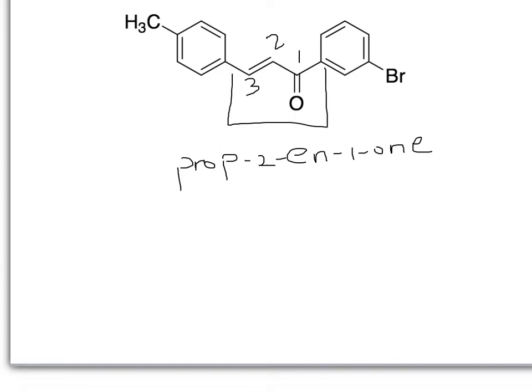Then we have to focus on these substituents. There's one there and one there. This substituent, we start numbering this way, one, two, three, and it will be three-bromophenyl.